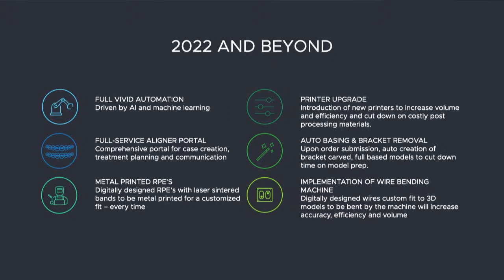Looking at our future plans for this year and the next couple years: we're going to have full Vivid automation—our clear aligner and clear retainer line—driven by AI and machine learning. We'll have a full-service clear aligner portal where doctors submit cases, get their ClinCheck, and communicate changes. We're going to have full metal printed RPEs. We have a printer upgrade on the way next week that will improve print volume, print faster, and drastically reduce post-processing materials—a lot less IPA being used. We'll also implement auto-basing and bracket removal, so a new file with a base already on it will be ready to download immediately. Finally, we're implementing our wire bending machine, where you import the model, design the wire right on the dentition, and essentially print it out.